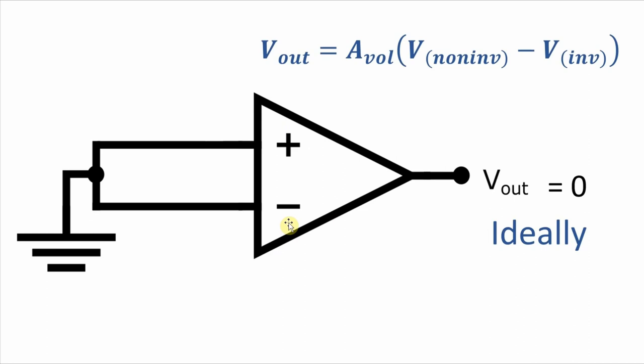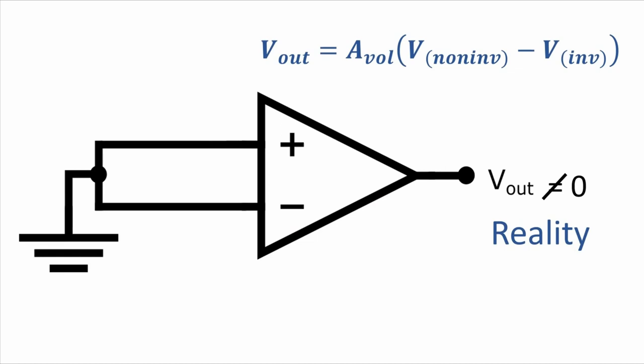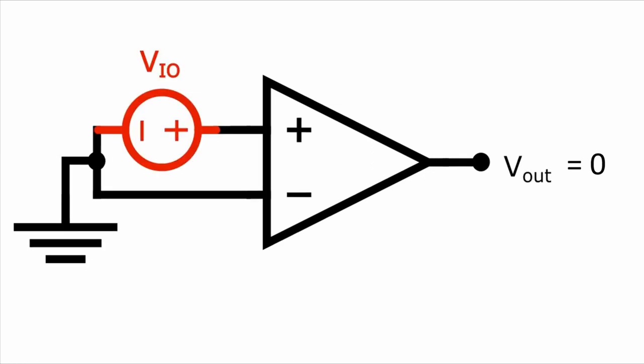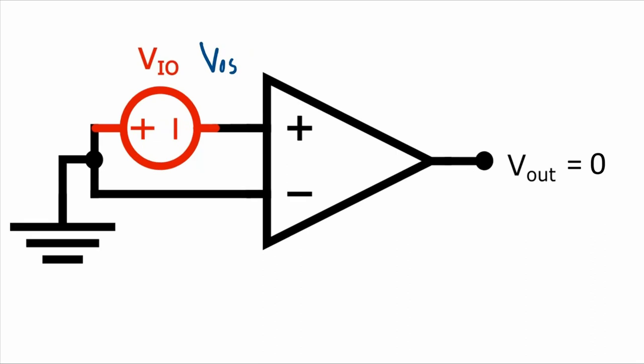And if both those voltages are zero, you would expect the output to be zero too. In reality, there will be a non-zero output voltage due to mismatches in the internal circuitry of the op-amp. The input offset voltage by definition is the voltage that must be applied across the two inputs to get zero volts at the output. The input offset voltage, which is indicated by VIO or alternatively VOS, can be positive or negative and it varies from device to device even if it's the same part from the same wafer lot.